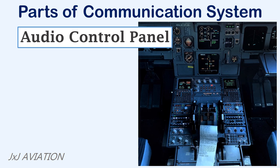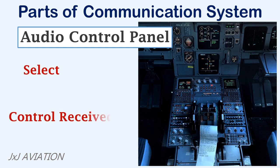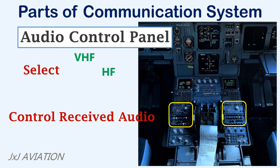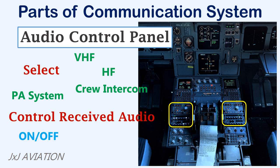The audio control unit allows the flight crew to select and control the received audio. From this panel, the crew may select VHF or HF channel for communicating with the ground station as required. They can also select crew intercom for communicating with other crew members or select the PA system to address the passengers. The audio control panel also has switches that can be used to turn the system on or off, or to adjust the volume in the headset or the speakers, and for transmission of audio over the selected channel.